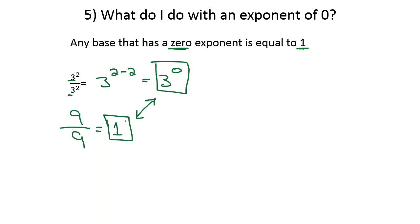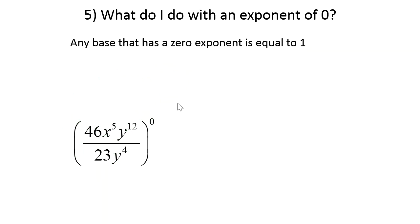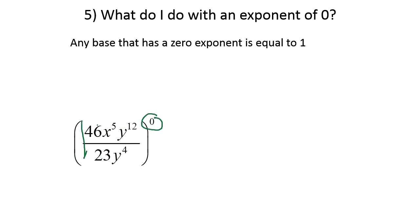Let's take a look at a slightly longer problem. Suppose we have this big expression in parentheses with a zero exponent outside the parentheses. You don't actually have to do anything inside the parentheses — because it's all being raised to the zero power, the whole thing is equal to 1.